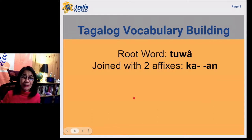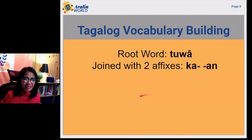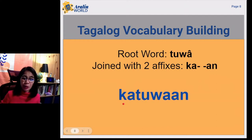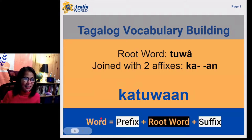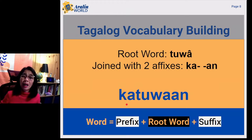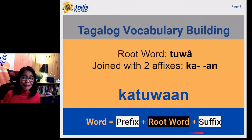Another example. We have the root word tuwa. We are considering the same prefix and the same suffix, ka and an. And we come up with a new word katuwaan. The new word is katuwaan. It has formed out of the prefix ka plus the root word tuwa plus the suffix an. Katuwaan.